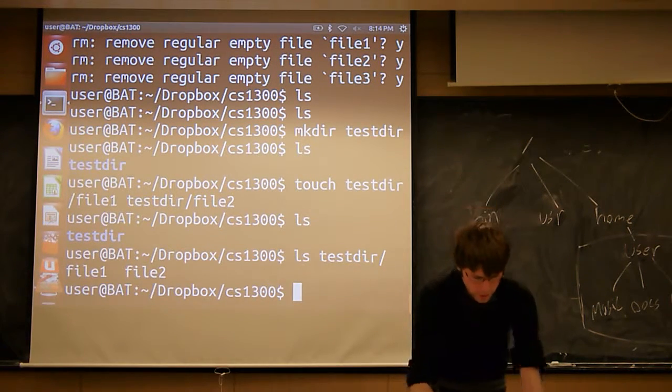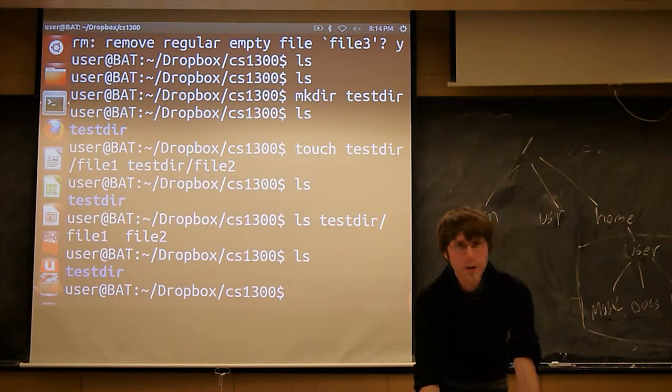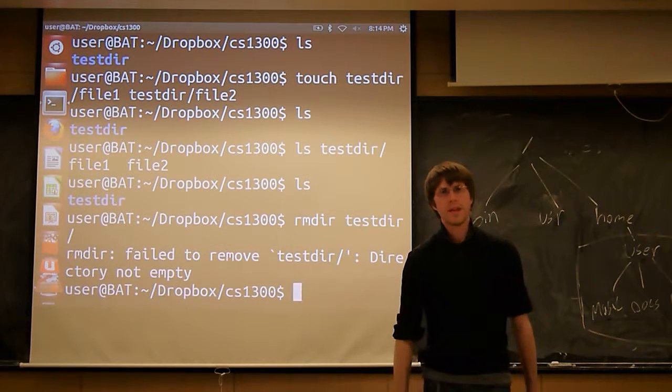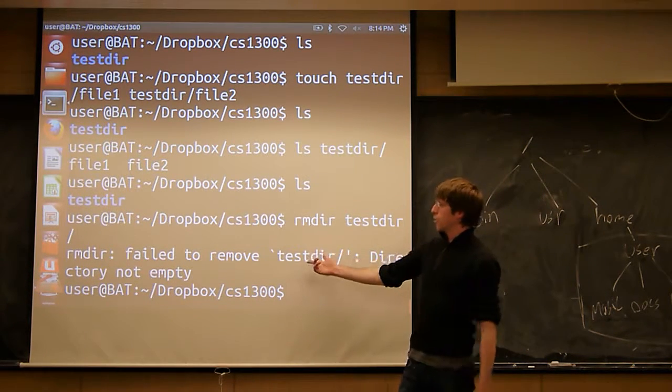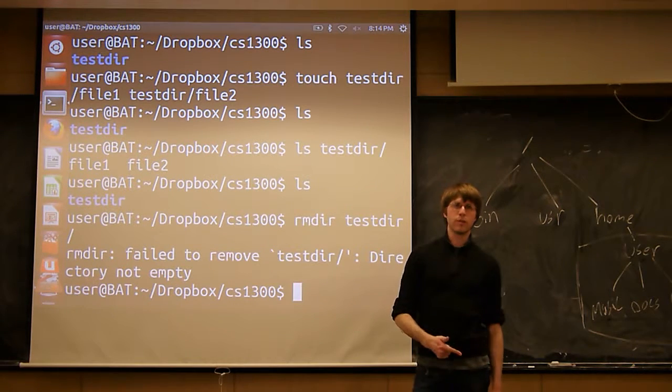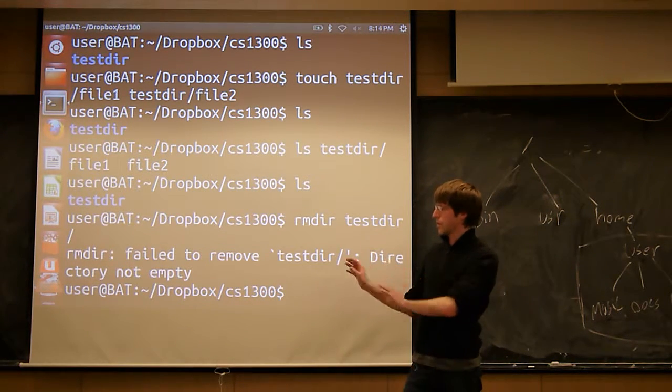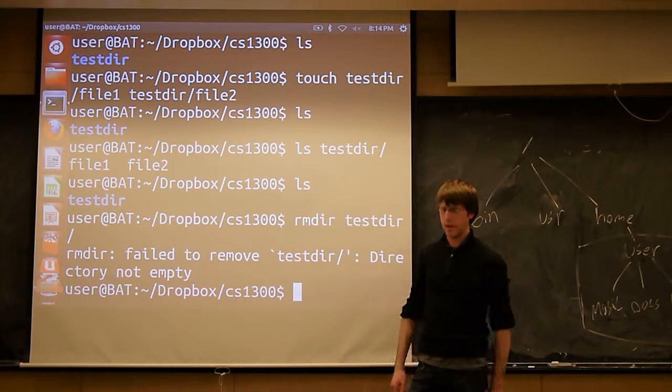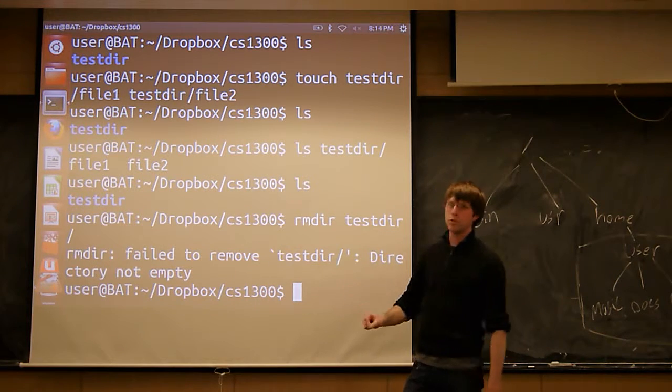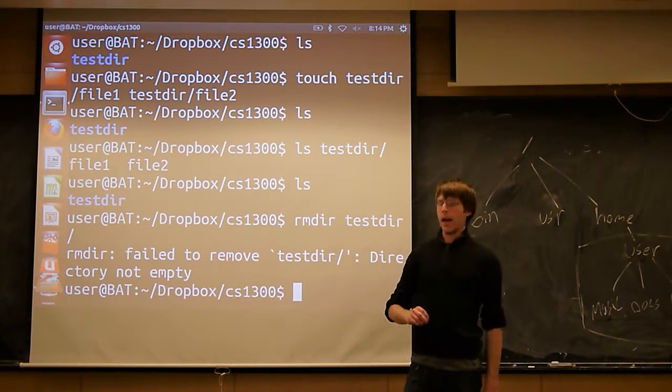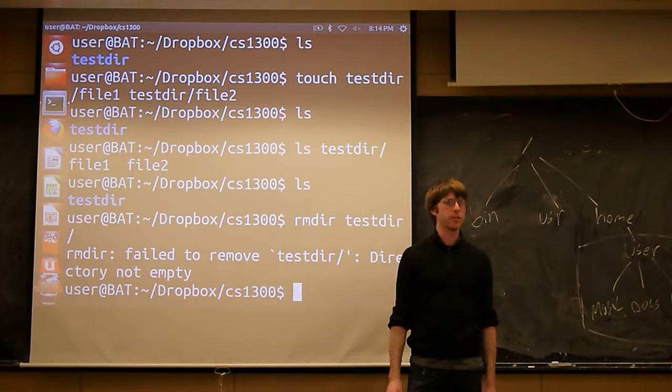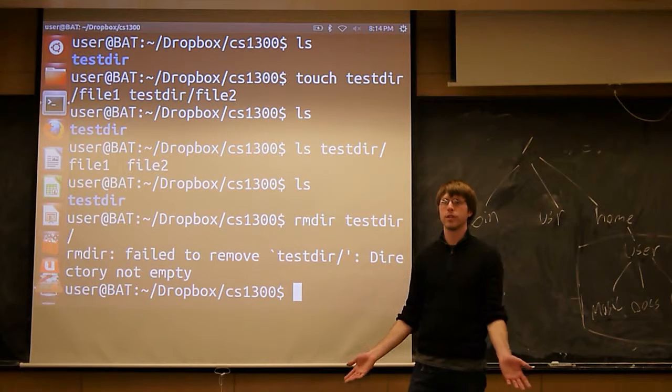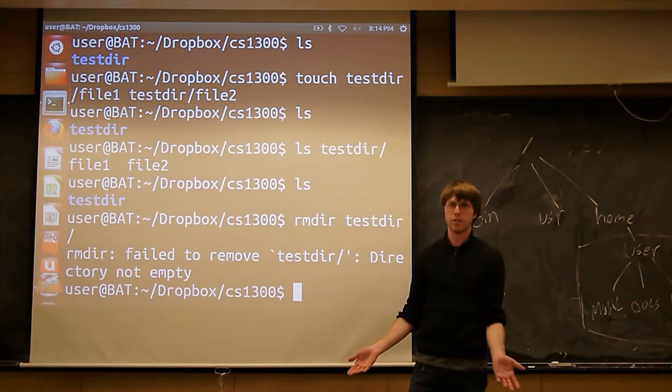We went over the rmdir command earlier, remove directory. So that's what I want to do now. I want to remove my test directory. So if I do rmdir test directory, it's going to throw me an error. The remove directory command will only work if the directory is empty. This is a fail-safe that kind of dates back a long time and has never been changed for historical reasons. But remove directory will only work on empty directories. As it turns out, that makes remove directory a very useless command, because your directories aren't often empty. And who wants to go and individually delete every file inside a directory in order to delete the directory itself?